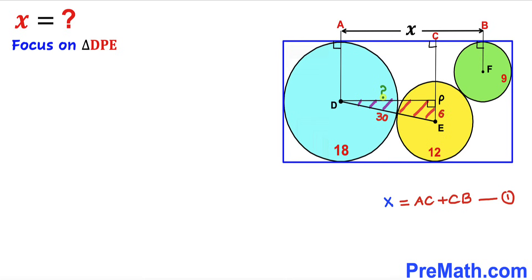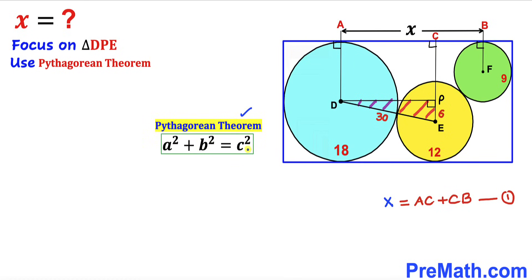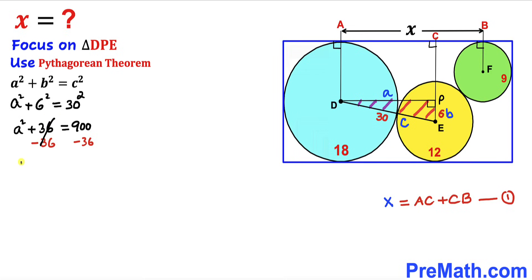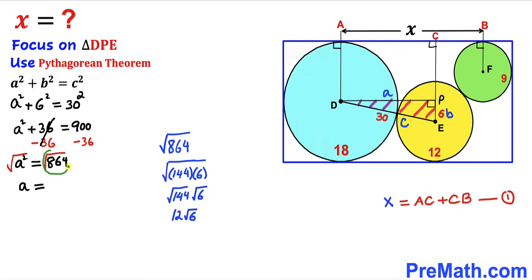Now we calculate side length DP using the Pythagorean theorem: a² + b² = c². Calling the longest leg c, we get a² + 6² = 30². Subtracting 36 from both sides, a² = 864. Taking the square root of both sides, a = √864, which simplifies to 12 times the square root of 6.